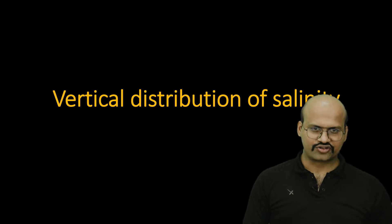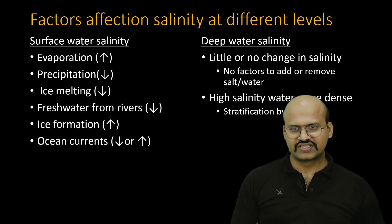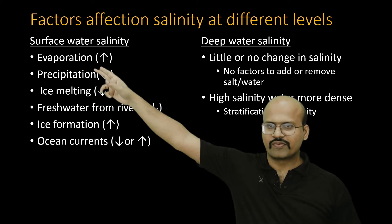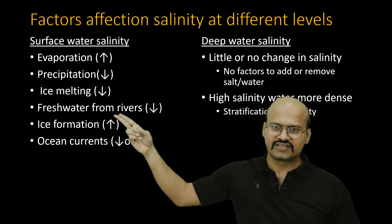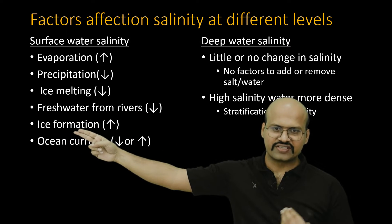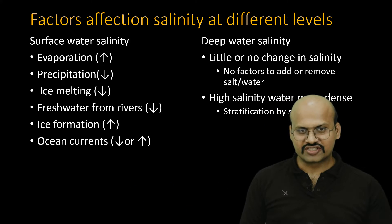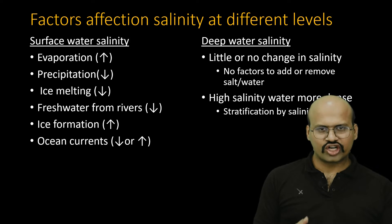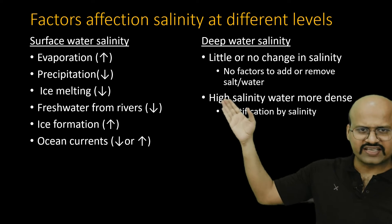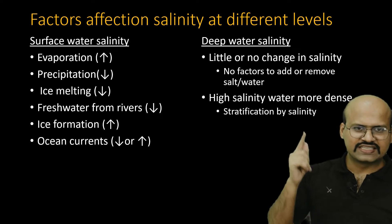Now let's see the vertical distribution of salinity. So far we have seen the horizontal distribution — how salinity varies on the surface of oceans. Now we will see how salinity varies with depth. At the surface, all these factors affect salinity: evaporation increases it; precipitation/rainfall decreases it; melting ice decreases it; fresh water from rivers decreases it; ice formation with brine rejection increases it; and ocean currents either increase or decrease salinity depending on which region the water comes from. However, there is little or no change in the salinity of deep waters, because no factors add or remove salt at those depths.